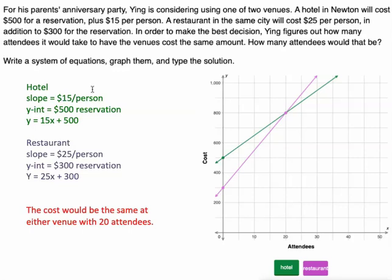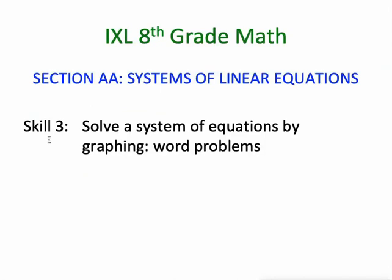All right, so stick with this one. It's a little bit difficult. You've got to be able to graph the situations, plugging in values, different values here to figure out outputs would be a good idea. And then you also have to come up with the right answer after you get that graph by looking at the intersection. Again, this is dealing with skill 3 in section AA of IXL's 8th grade math.